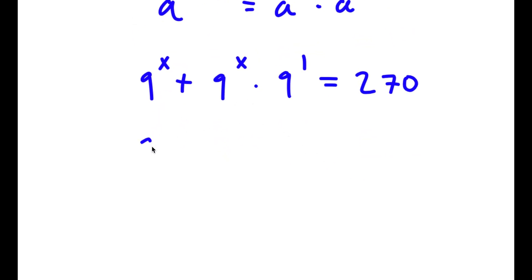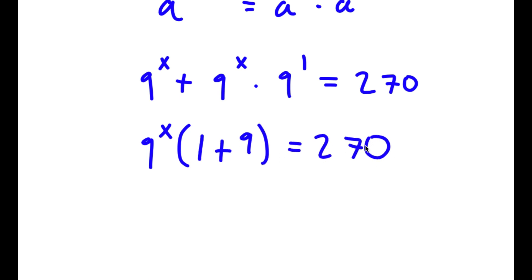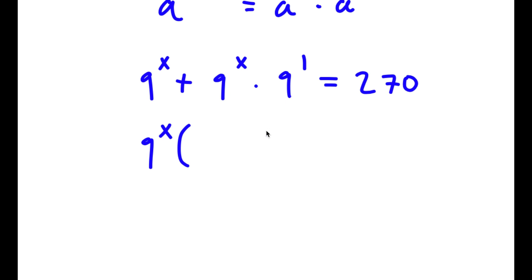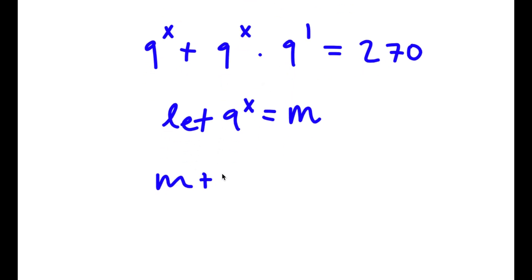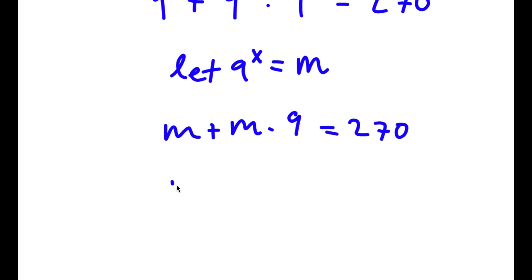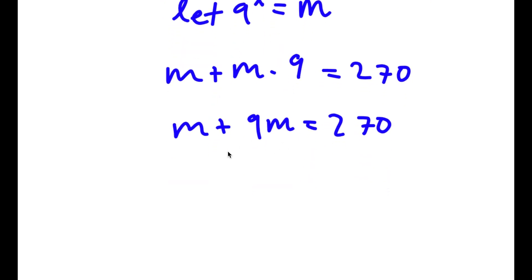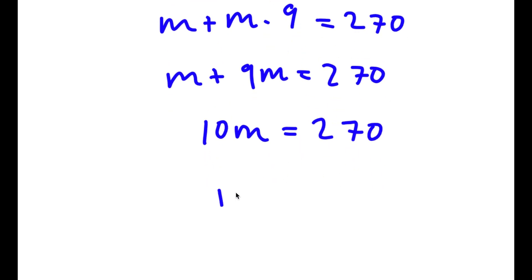I'm going to let 9 to the power of x equal the variable m. So now I have m plus m times 9 is equal to 270. m times 9 is simply 9m, so I have m plus 9m is equal to 270. 9m plus m is 10m, so I have 10m is equal to 270, meaning m is 27.